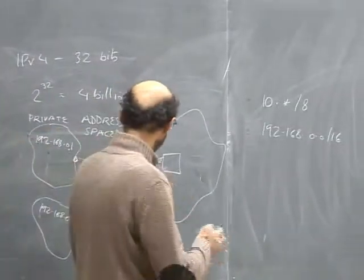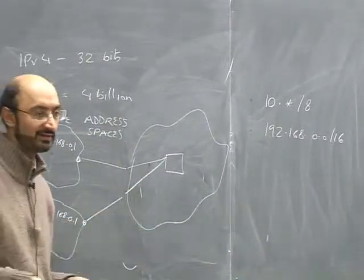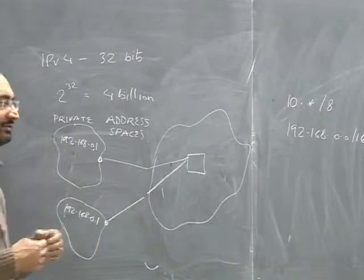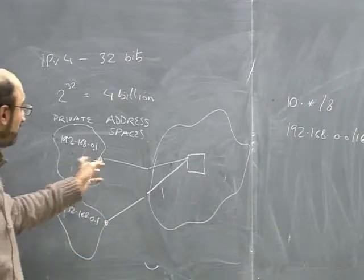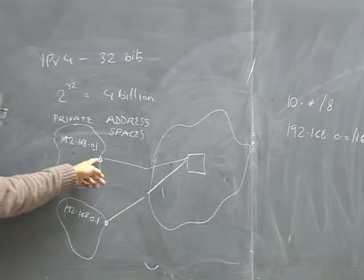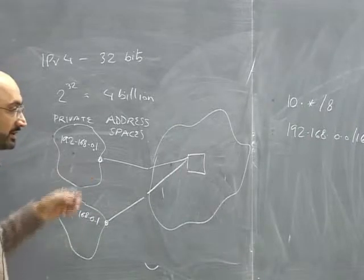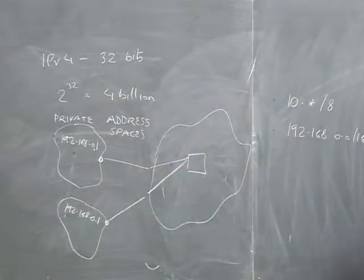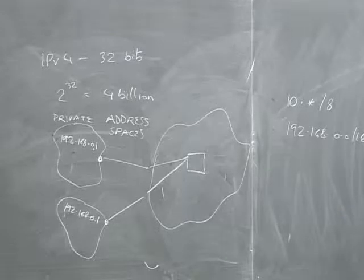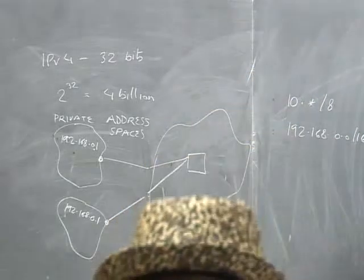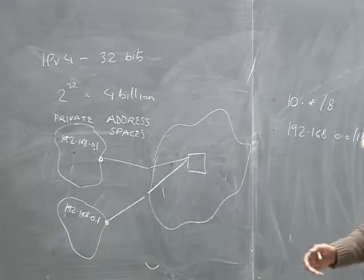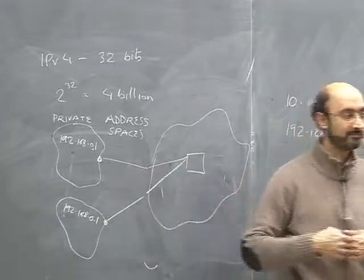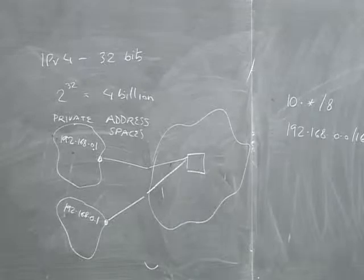Public and private addresses go hand in hand with NAT, because without it you can't communicate with the public Internet. You could have a local area network completely isolated from the rest of the world, where all addresses are 192.168, and not worry about NAT. But if you want to talk to the outside world, you need some kind of translation in the middle. Private address spaces essentially make the IPv4 address space much, much larger than it actually is.